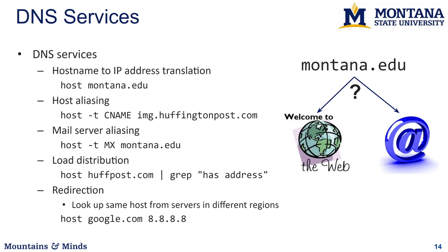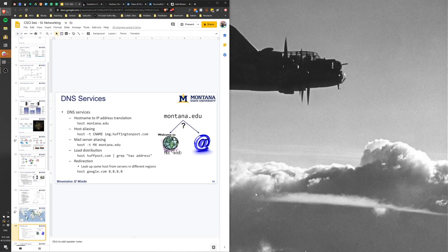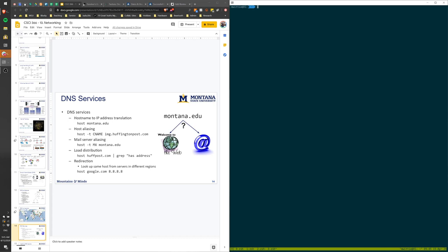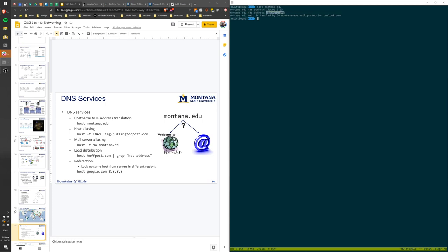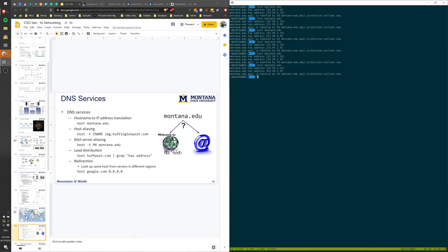To interact with DNS, you can use the 'host' or 'dig' programs. Logging into an Ubuntu server and running 'host montana.edu' gives you different IP addresses — load balancing where you can connect to either of two servers responding to montana.edu. Running it again, the order of IP addresses switches, so different clients pick the first one, distributing load across the two IP addresses.